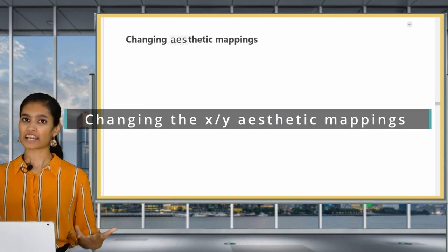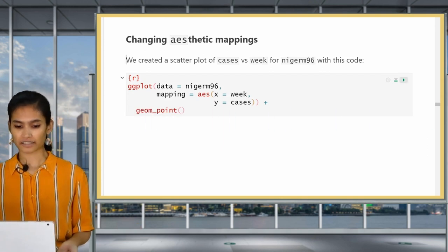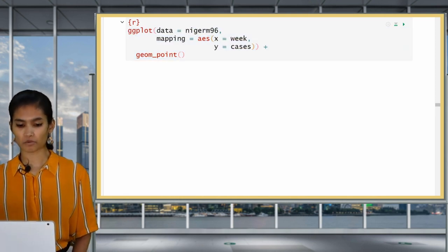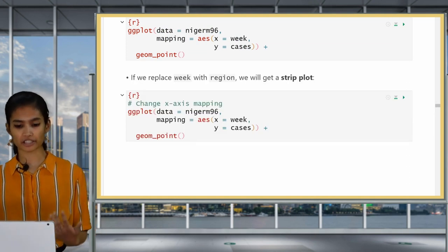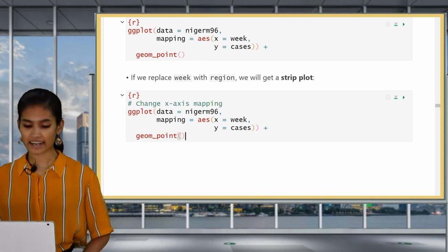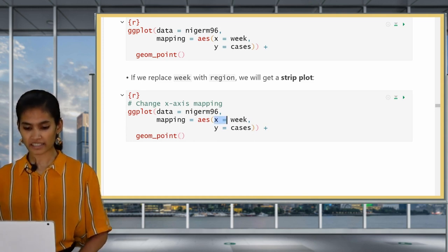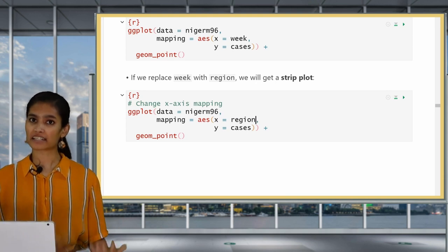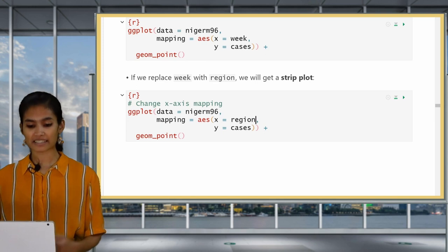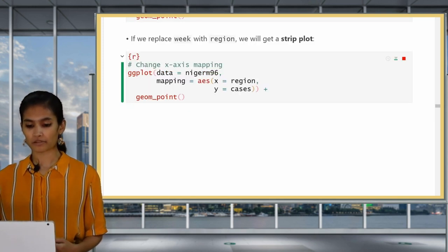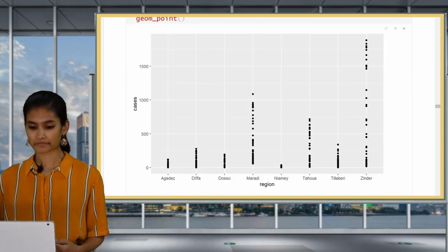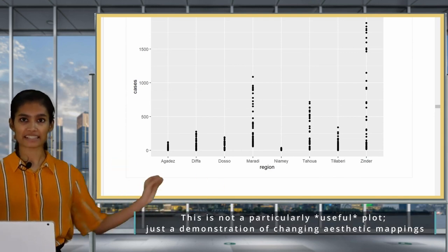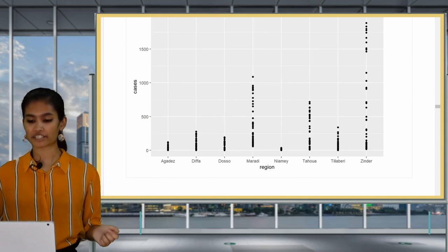So first of all, we're going to change the aesthetic mappings. So let's look at our original code first. This is our original scatter plot. Now I will copy this code and I want to modify it. Let's try changing the aesthetic mapping here. Let's replace week in the x-axis aesthetic to region. Week is a continuous variable and region is a categorical variable. So instead of a scatter plot, we will get what is called a strip plot. You'll see that instead of the continuous scale for week that we have before, we have eight distinct categories, one for each region.